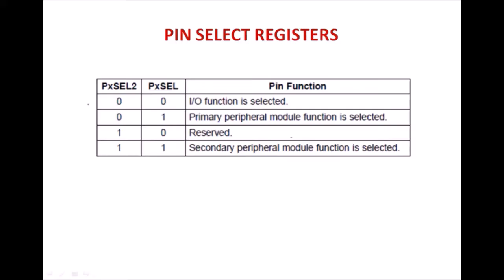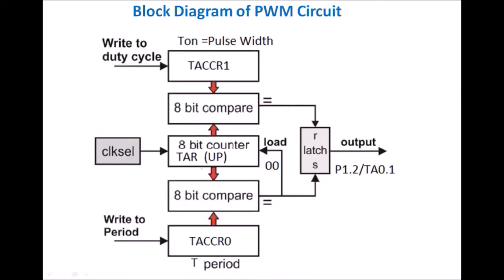When these two bits are 0, 0, then I/O functions are selected. For 0, 1, the primary peripheral module function is selected. For 1, 0, it is reserved. And 1, 1 means the secondary peripheral module function is selected. So using these two registers, we can select the function of a particular pin of MSP430.